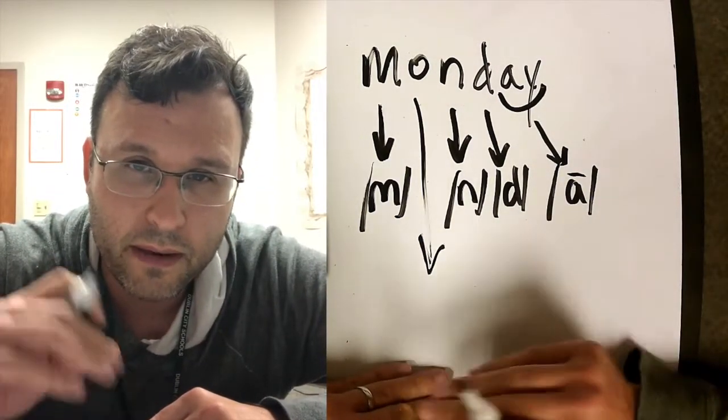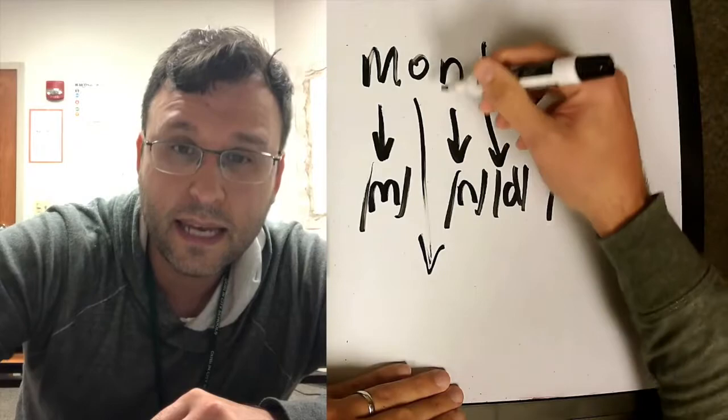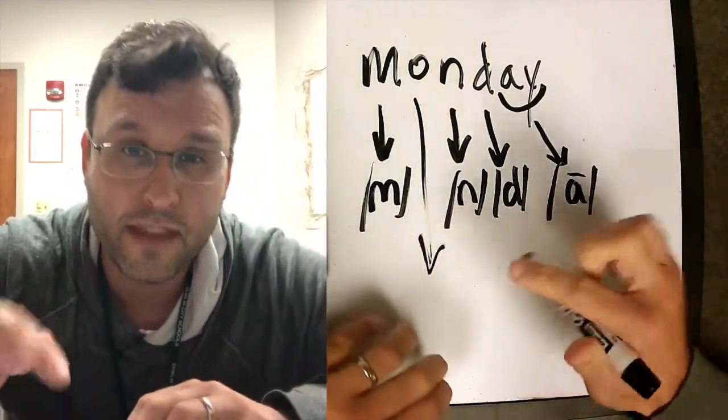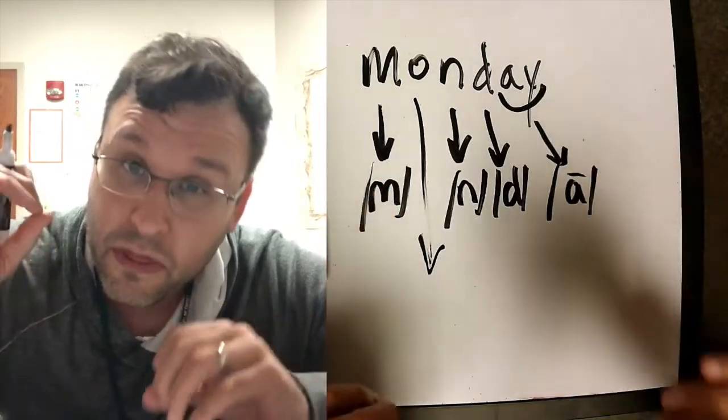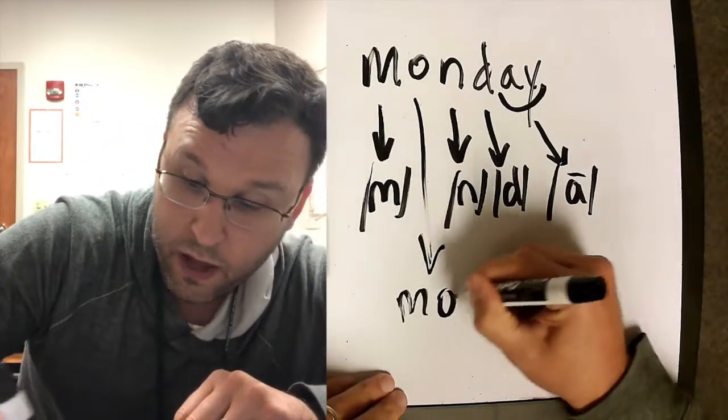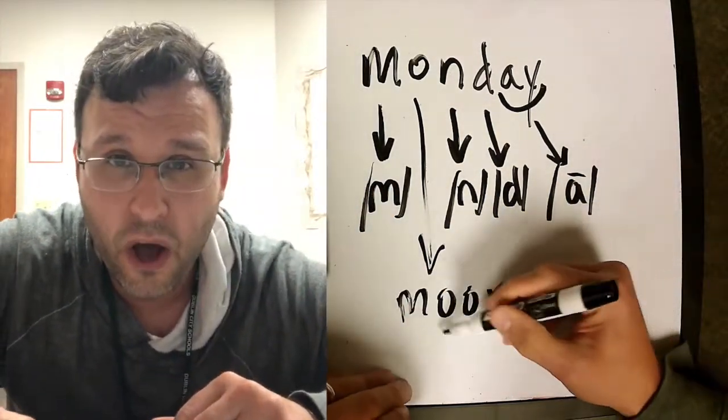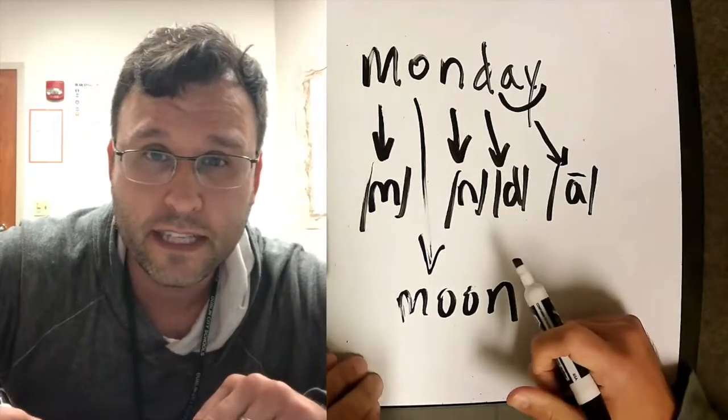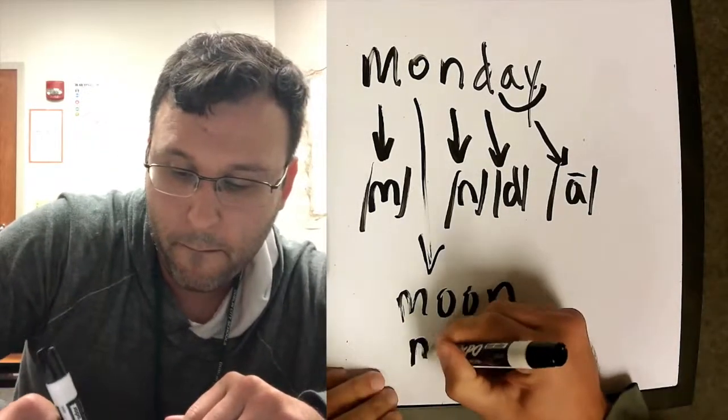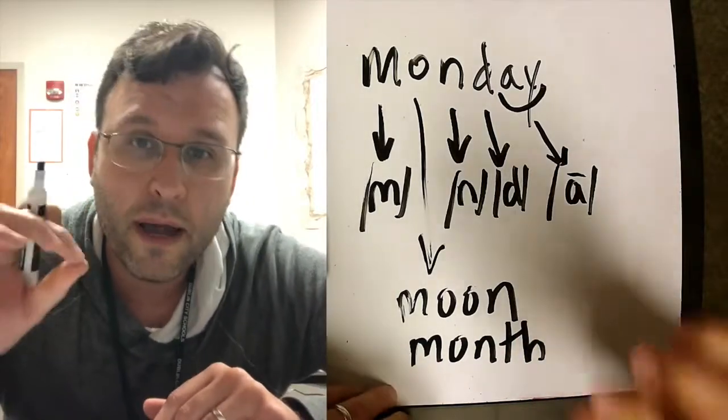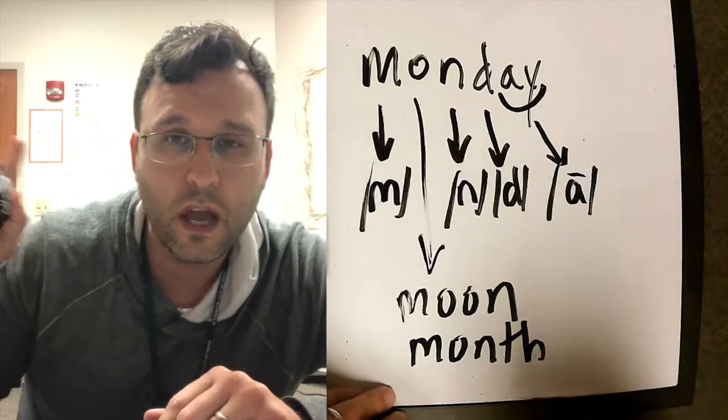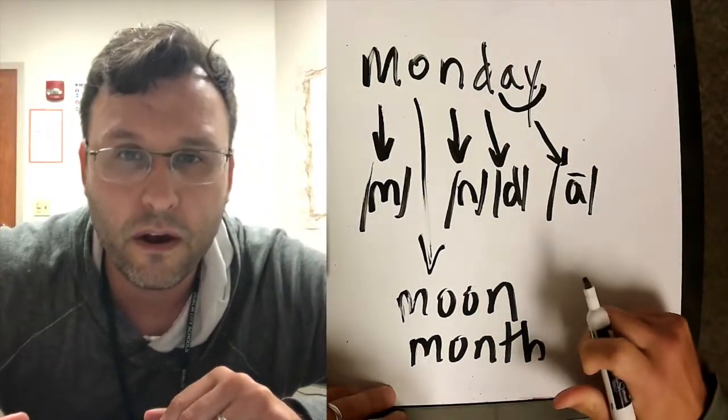The reason there is an O in Monday is because the word Monday was named after the second biggest thing in the sky, the moon. And the word moon, well, if we look at it, it has that O in it. Another word that fits in this family is the word month. Do you see the O in both those words?